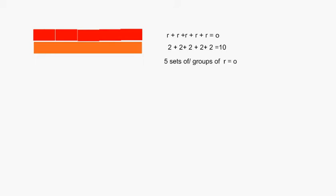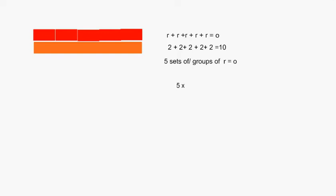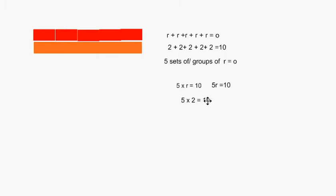Mathematically, we would write it this way: 5 groups of — we use this mathematical symbol — and 5 groups of what? 5 groups of reds or 5 groups of 2. So 5 groups of reds equals 10, 5 times 2 equals 10, 5 groups of 2 equals 10, 5 groups of reds equals the 10 which is the orange.